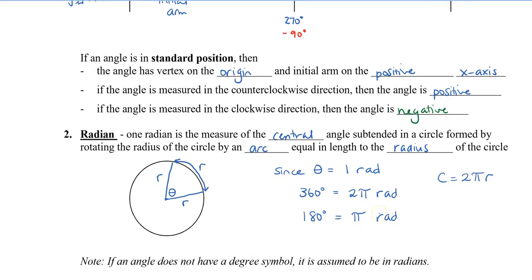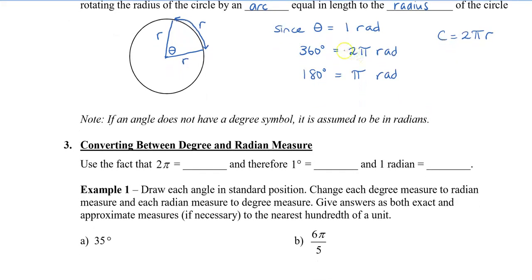Let's take a look at how to convert back and forth. We're going to use the fact that 2π is equal to 360 degrees. Therefore, we know that 1 degree — if I divide both sides by 360 — equals π over 180 radians. Or, if I want to figure out what 1 radian is, I divide both sides by 2π, so 1 radian is equal to 180 over π degrees.